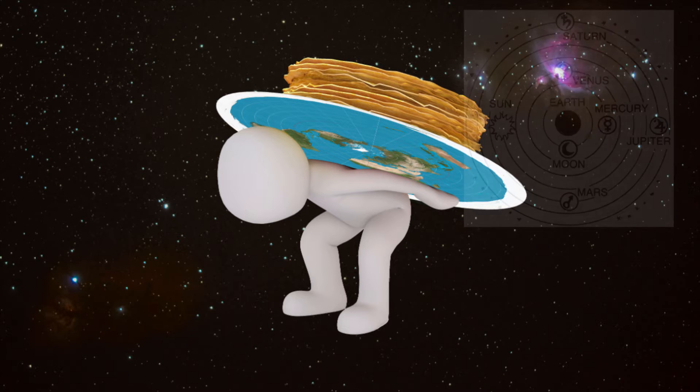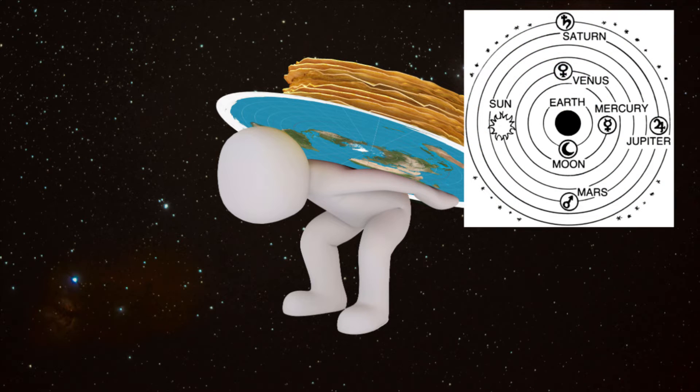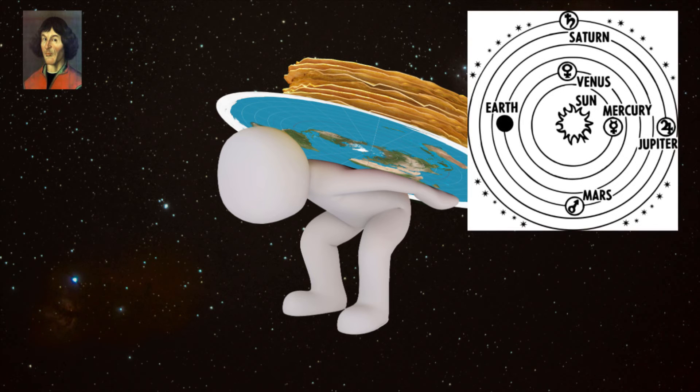For much of the past 2,000 years, astronomers believed that the Earth was the center of the universe and that all other objects orbited around it. But in the early 1500s, Nicholas Copernicus developed his idea of heliocentrism, placing the sun at the center, not man.